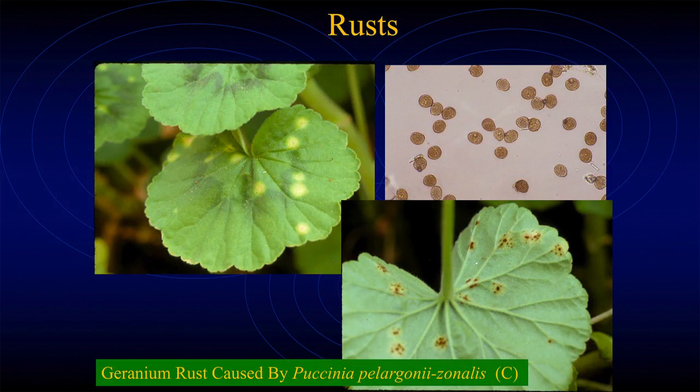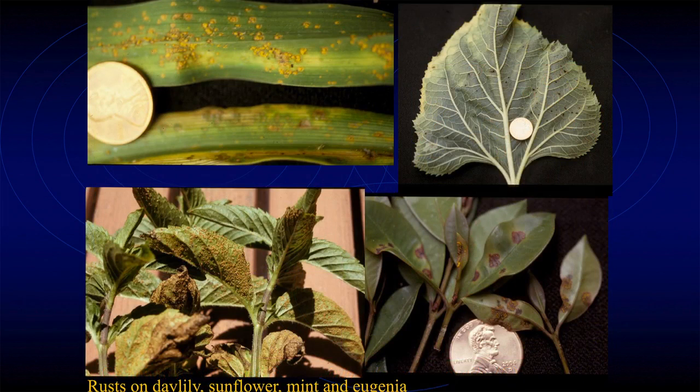One of the most common rust genera is Puccinia. Geranium rust came in around the 1970s - it wasn't here at first. There's daylily rust, Puccinia hemerocallidis, rust on sunflower, rust on mint, and rust on eugenia - Puccinia psidii. That one is fairly new and native to Central America. It moved in on the Myrtaceae - they noticed it first in Brazil, where they were growing huge eucalyptus plantations for paper pulp, and this little rust jumped from a weed in Central America onto the eucalyptus. It's been going crazy ever since.